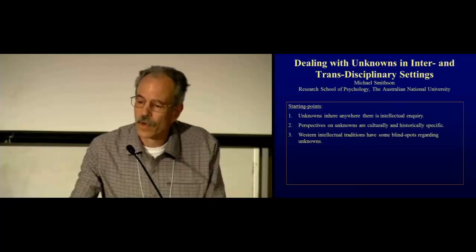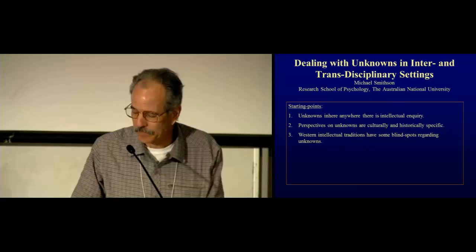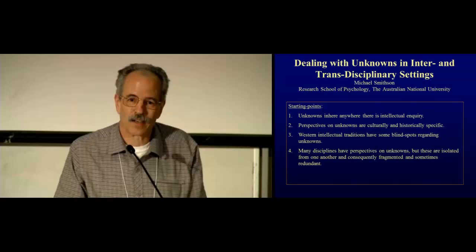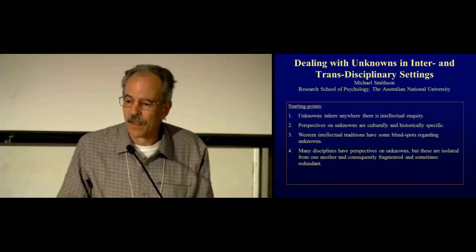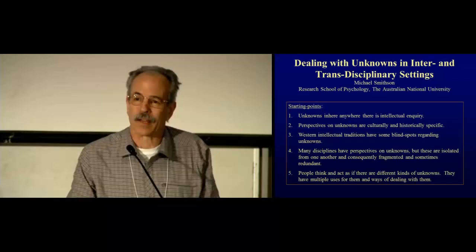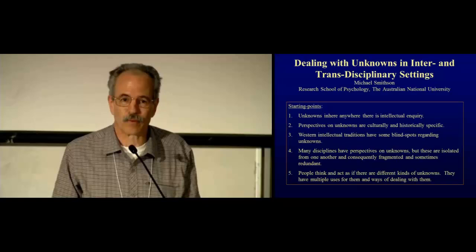Western intellectual traditions have got some blind spots regarding unknowns. Now, other cultural traditions probably have blind spots too, but I'm a flat-headed Westerner, so I'm just going to tell you about the Western ones. Most disciplines have got perspectives on unknowns. These are oftentimes isolated from one another. They're fragmented. Sometimes they're redundant. And sometimes, of course, they talk past one another. I'll talk about that a little later on too. And finally, there's a tendency when people talk about unknowns to use a single gloss term like wickedness or complexity or uncertainty. That's a mistake. People think and act as if there are different kinds of unknowns. They have preferences for some kinds over others, and they have multiple uses and purposes for them and ways of dealing with them.